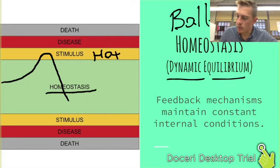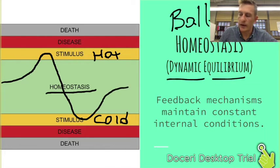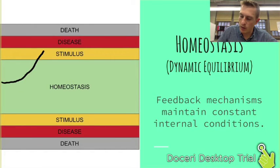This is what we call a feedback mechanism — it feeds you back into homeostasis. On the other end, if things get too cold, my body responds and brings me back so that I'm okay. An important thing to consider is that from time to time a stimulus will happen and an organism won't be able to bring itself back into homeostasis — that's what we call a disease.